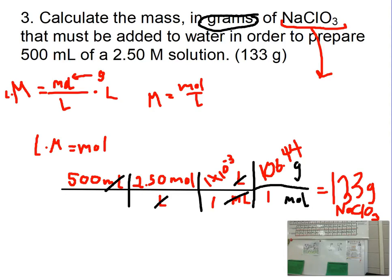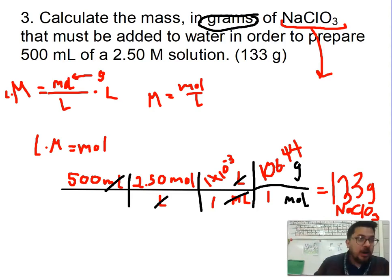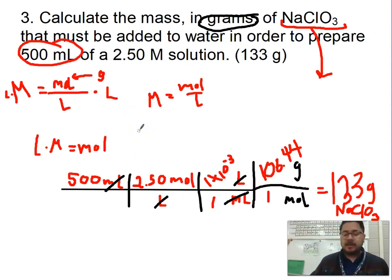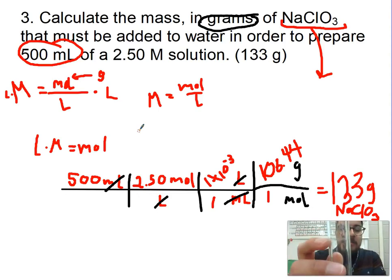You're going to grab NaClO3 and then grab a scale — a little scale like this. You're going to put the weigh boat on it and measure out 133 grams. Then you're going to find the 500 milliliter volumetric flask. This flask has a little line on it, and that line marks exactly 500 milliliters.